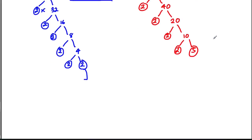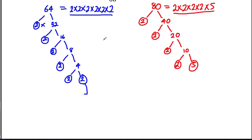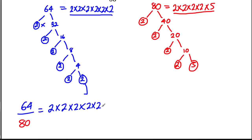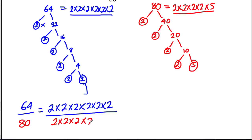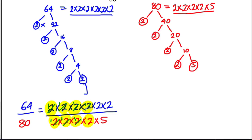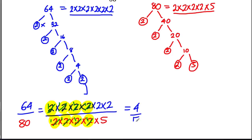To simplify 64 over 80, we write it as 2 times 2 times 2 times 2 times 2 times 2 on top, all divided by 2 times 2 times 2 times 2 times 5. There's a 2 on top and bottom — divide and get 1s. Another 2 on top and bottom, another, and another — all divided to become 1s. We're left with 2 times 2 on top, which is 4, and just 5 on the bottom. So 4 fifths is the answer.